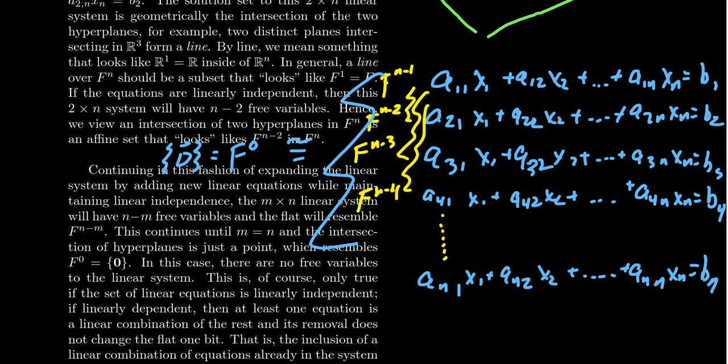So we could describe flats as intersections of hyperplanes. You have one hyperplane, you're going to get Fn minus one. Two hyperplanes, if they're independent, will give you Fn minus two. If you have three hyperplanes, if the equations are independent, you'll get Fn minus three. You can keep on adding more and more equations until at the end, you have a single point.